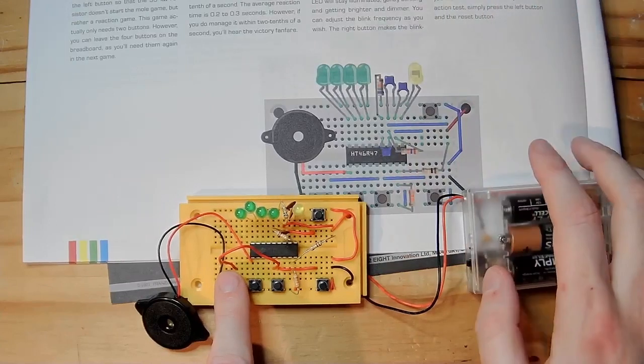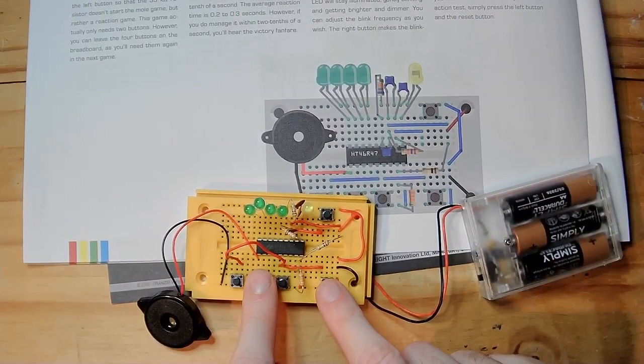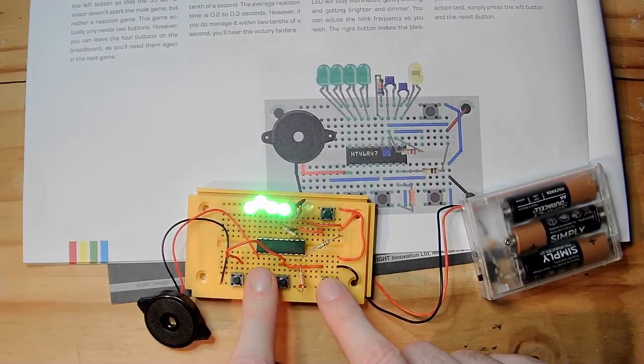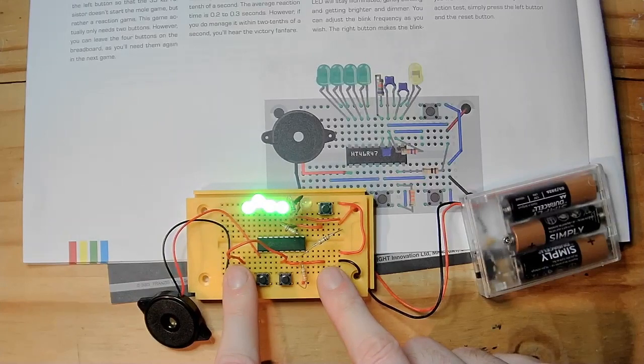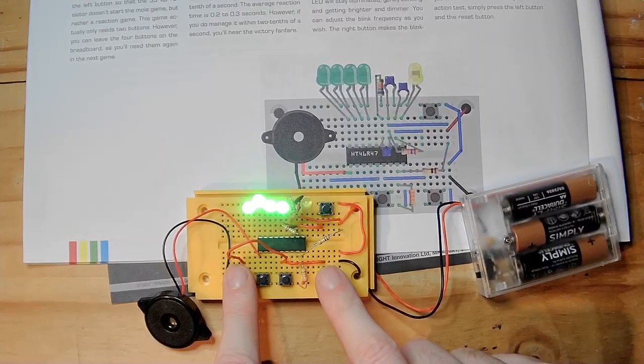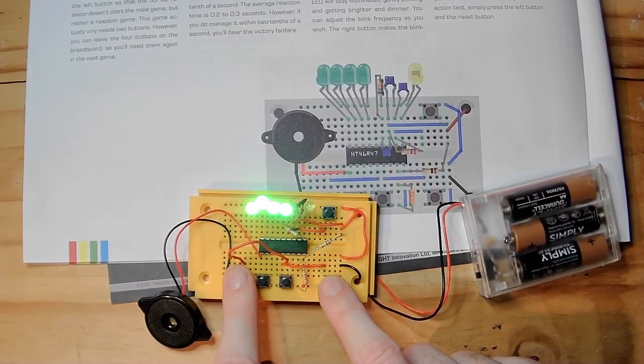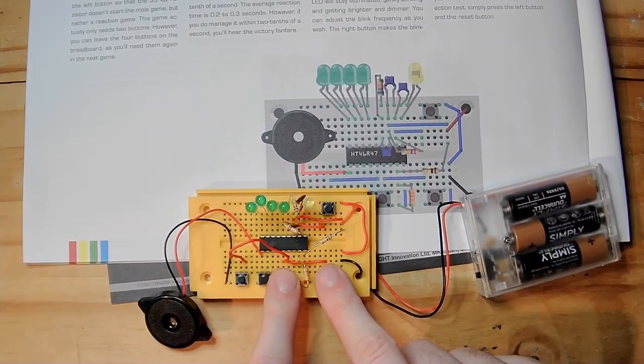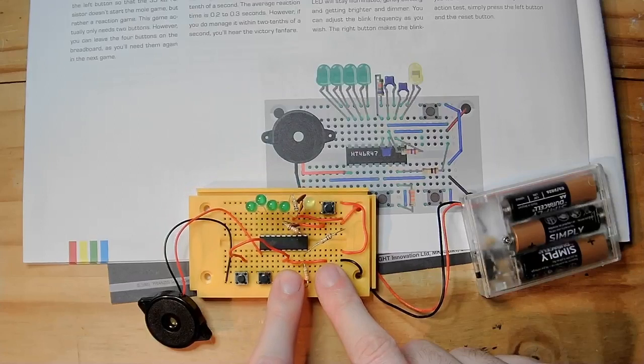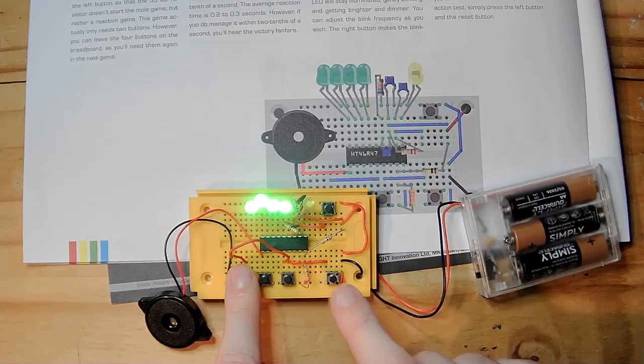So apparently we can actually slow this down a little bit to make it a bit easier according to what it says here. So if I hold down that button, turn on, and then I can tap these down. See, it goes slower. There we go, right, we can do this now. I'm going to speed it up. Yeah, okay.